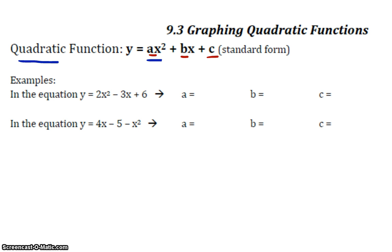All right, so you should have come up with a is 2, because it's the coefficient of the x squared term. b is negative 3, don't forget the negative, and c is 6.